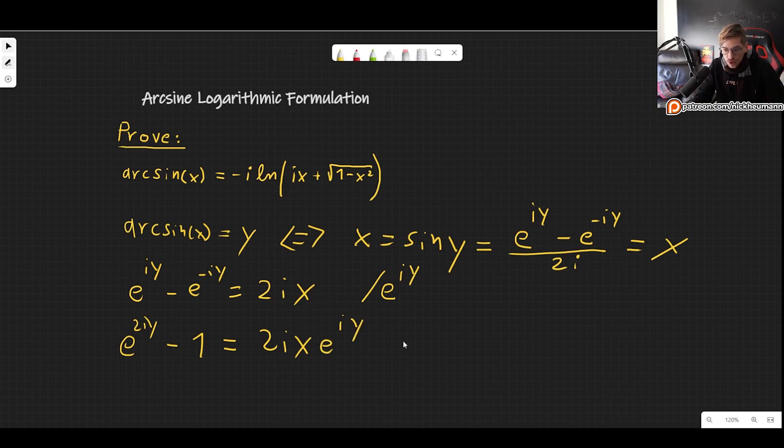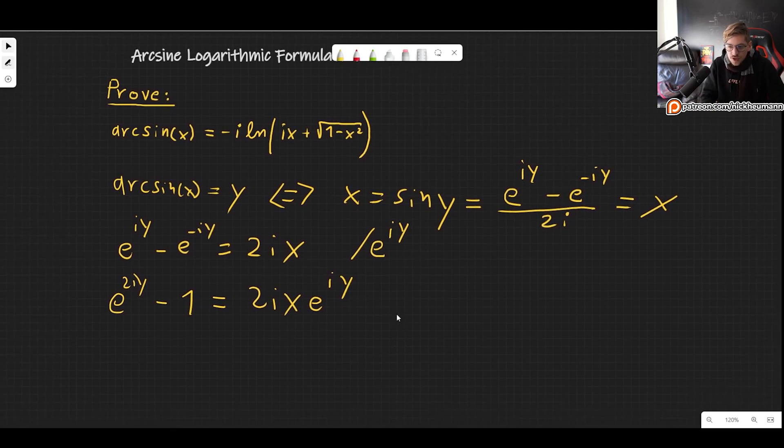Now, this may not really look like we made much progress because we still have two different exponentials. But notice that we have e to the 2iy, which is the square of this term right here.